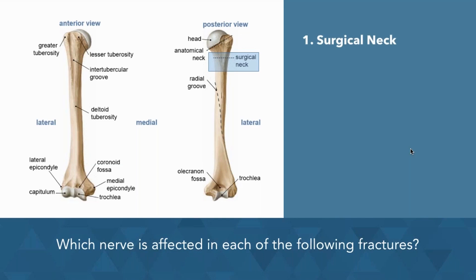Even low-energy falls onto the hand can transmit the force up the arm into the extended arm, which can result in a fracture. We can see the nerve affected in this fracture is the axillary nerve.